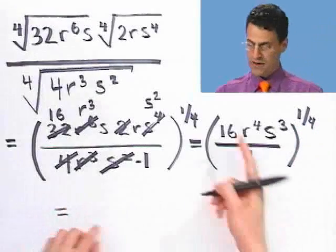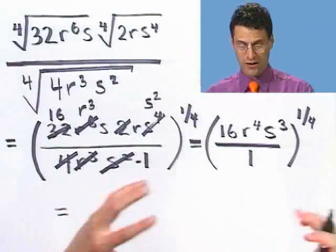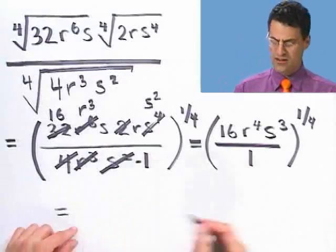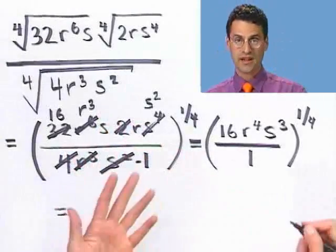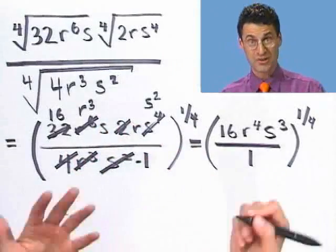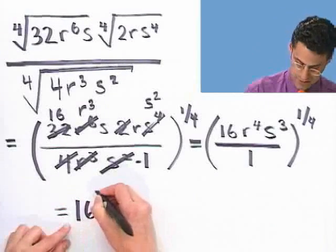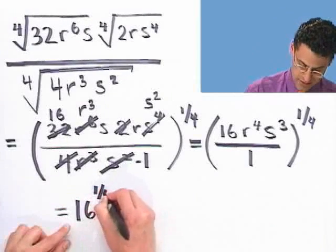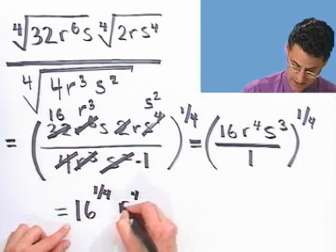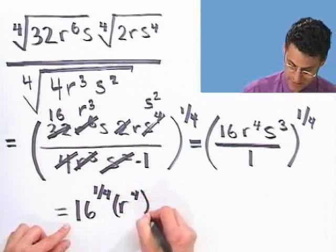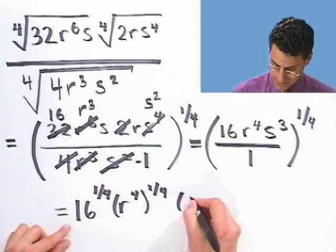Now I need to take the fourth root of all of that. I can do it à la carte again — I'll write it using one-fourth exponents so that every single term gets its own fourth root.